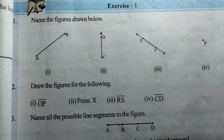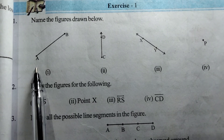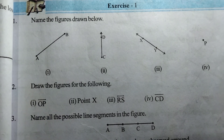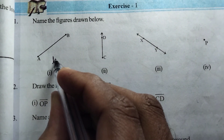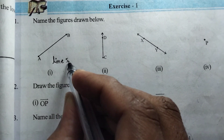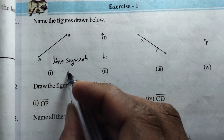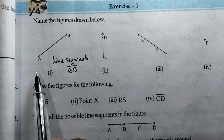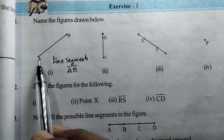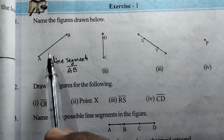First question: name the figures drawn below. For the first Roman numeral problem, this is a line segment — line segment AB. A line segment has two definite endpoints and a definite length.